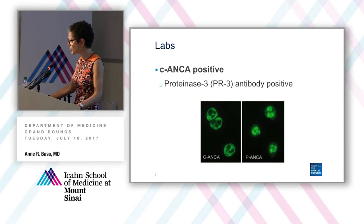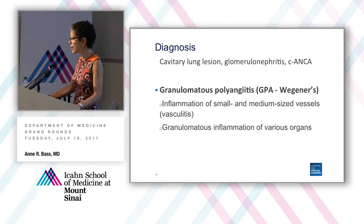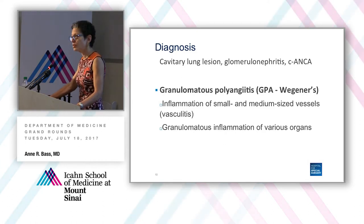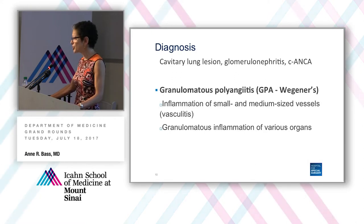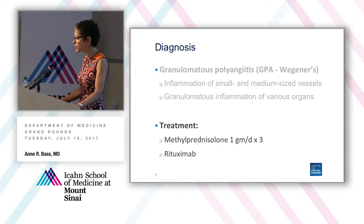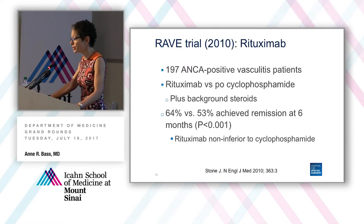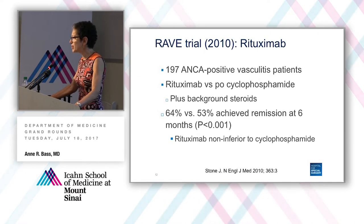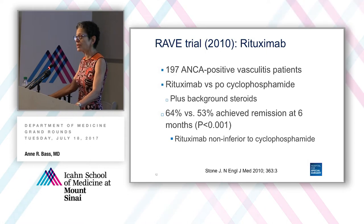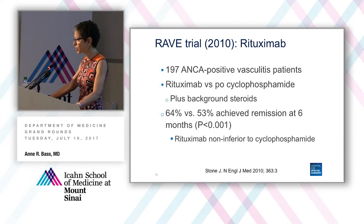The combination of a cavitary lung lesion, glomerulonephritis, pauci-immune, and C-ANCA leads to a diagnosis of granulomatous polyangiitis, which we used to call Wegener's — a condition where there's inflammation of the small and medium-sized vessels and granulomatous inflammation of various organs. The patient is treated with pulse methylprednisolone for three days and given IV rituximab, on the basis of the RAVE trial published seven years ago, where almost 200 ANCA-positive vasculitis patients were randomized to rituximab compared to oral cyclophosphamide, and rituximab was shown to be non-inferior with slightly better outcomes.